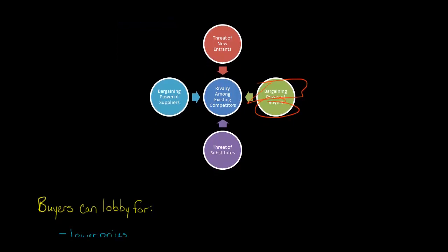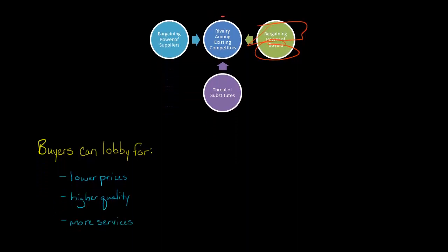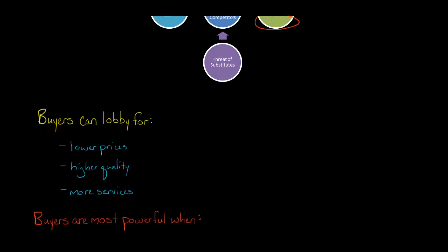So buyers can pressure companies to reduce their prices, to provide higher quality products, and to provide other services. And this can reduce companies' profit margins. If the buyers are pressuring you to lower prices and you're in a situation where they have more power than you do and you have to reduce the prices, that's going to lower your profits. And so buyers do not have the same amount of power in every single industry.